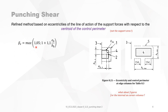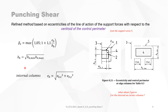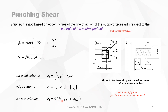The coefficient beta_E is the maximum of 1.05 and 1 plus 1.1 times the eccentricity EB divided by the width BB. The width BB is the square root of BB_min times BB_max, as indicated on the drawing — but again, only for the edge column. For internal columns, EB is the square root of the sum of the two directional eccentricities. For edge columns, it is 0.5 times the eccentricity in X plus the eccentricity in Y. For corner columns, it is 0.27 times the sum of the two eccentricities.